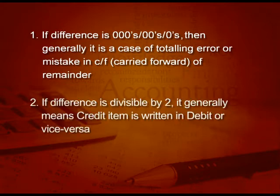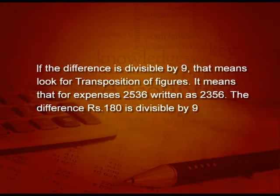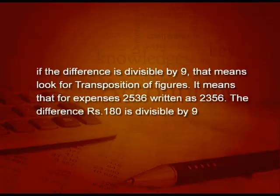If there is still a difference, find out the exact amount. Here is a very interesting observation: if the amount of difference is in thousands, hundreds, or tens, it is generally a case of totalling error or mistake in carry forward. If the difference is divisible by 2, generally some credit item is written in the debit column or vice versa. And if the difference is divisible by 9, look for transposition of figures — for example, 2536 written as 2356. The difference is 180, which is divisible by 9. This is always the case — transposition of figures is always divisible by 9.